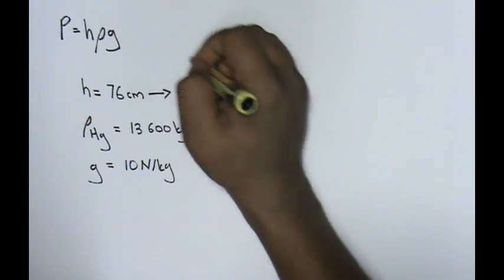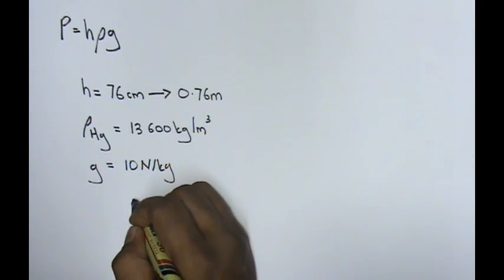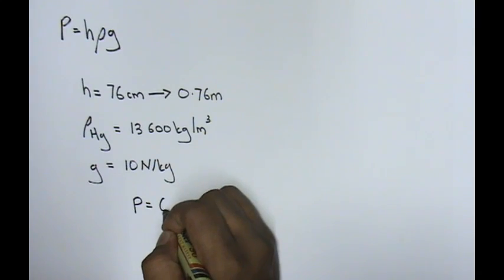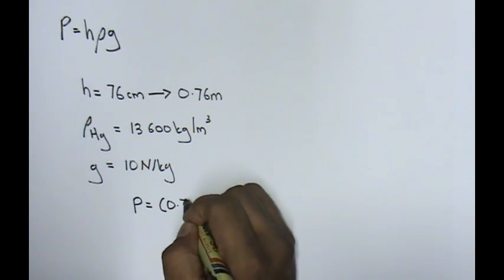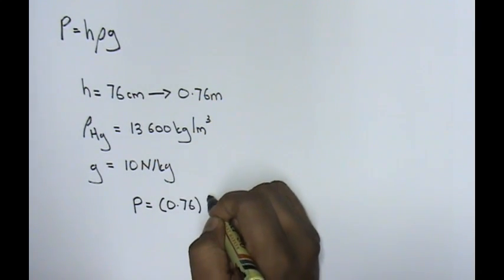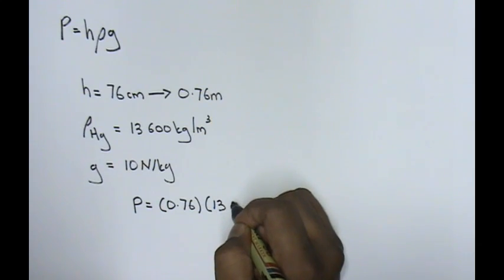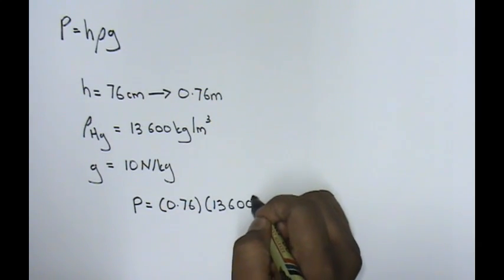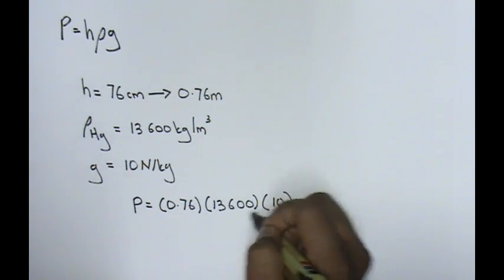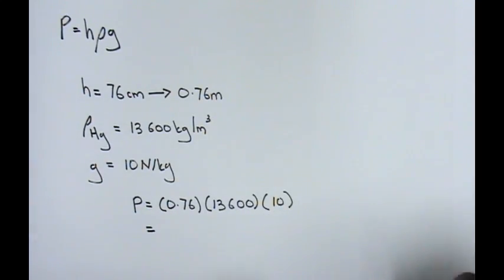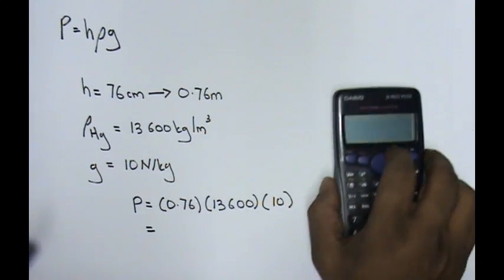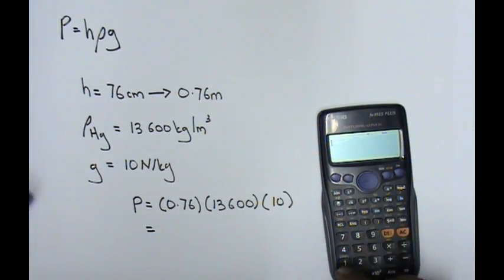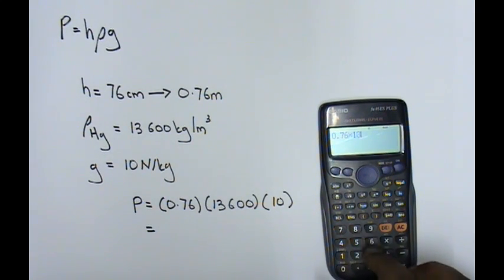Now, using this formula, pressure equals to H 0.76 meters and the density for mercury is 13,600 kilograms per cubic meter. When we times the whole thing, do it together with you, 0.76 times 13,600 times 10.